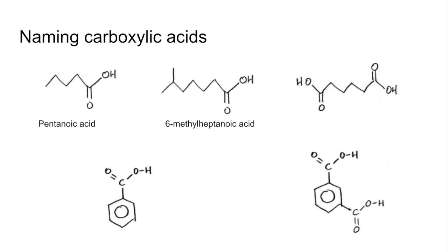The next one has got 2 carboxylic acid groups, so this is what we call a dioic acid. It has 1, 2, 3, 4, 5, 6 carbons, so that's hexanedioic acid.